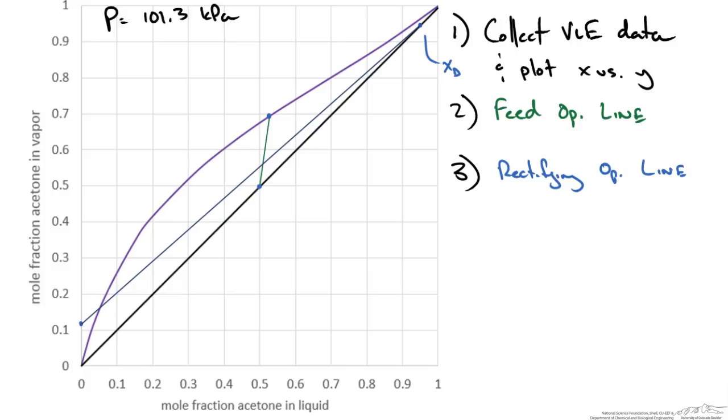The last line we need to add to our plot is that for the stripping section. Now that we have two of our operating lines, we know that the stripping operating line must also coincide with an intersection of these points. We see an intersection between our feed line and our rectifying line here. The other point we know is that the bottoms composition is 0.05, which falls on our xy line. We can just draw a line between these two points to determine our stripping line.